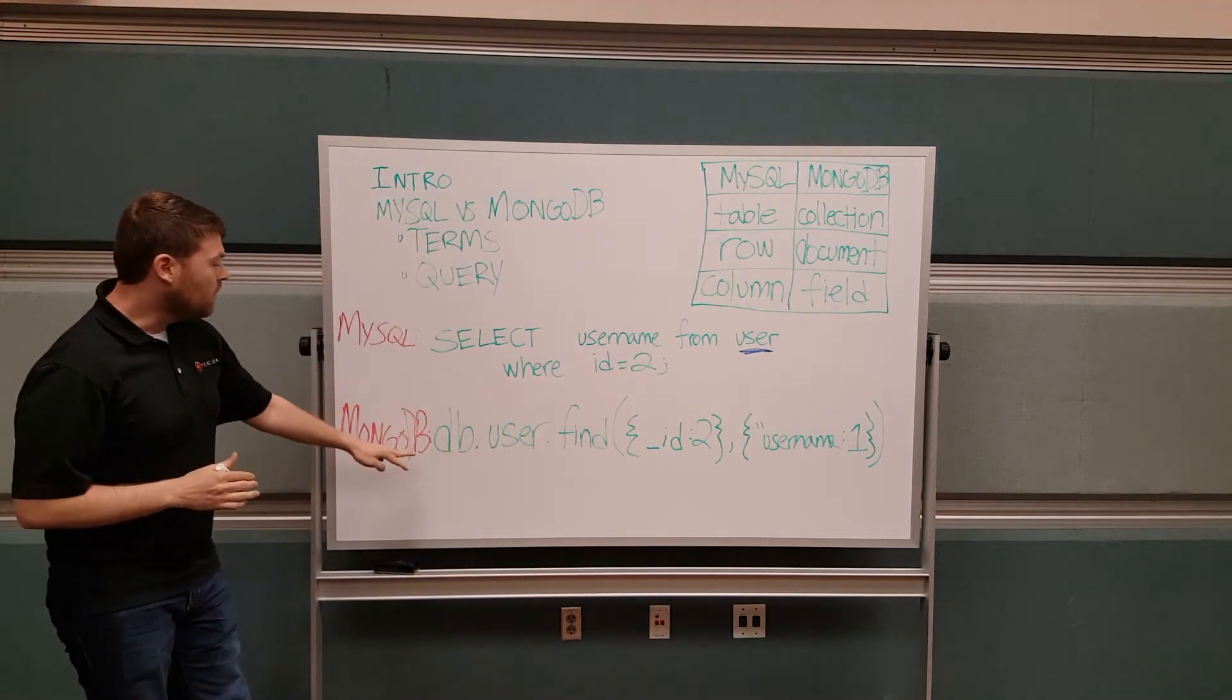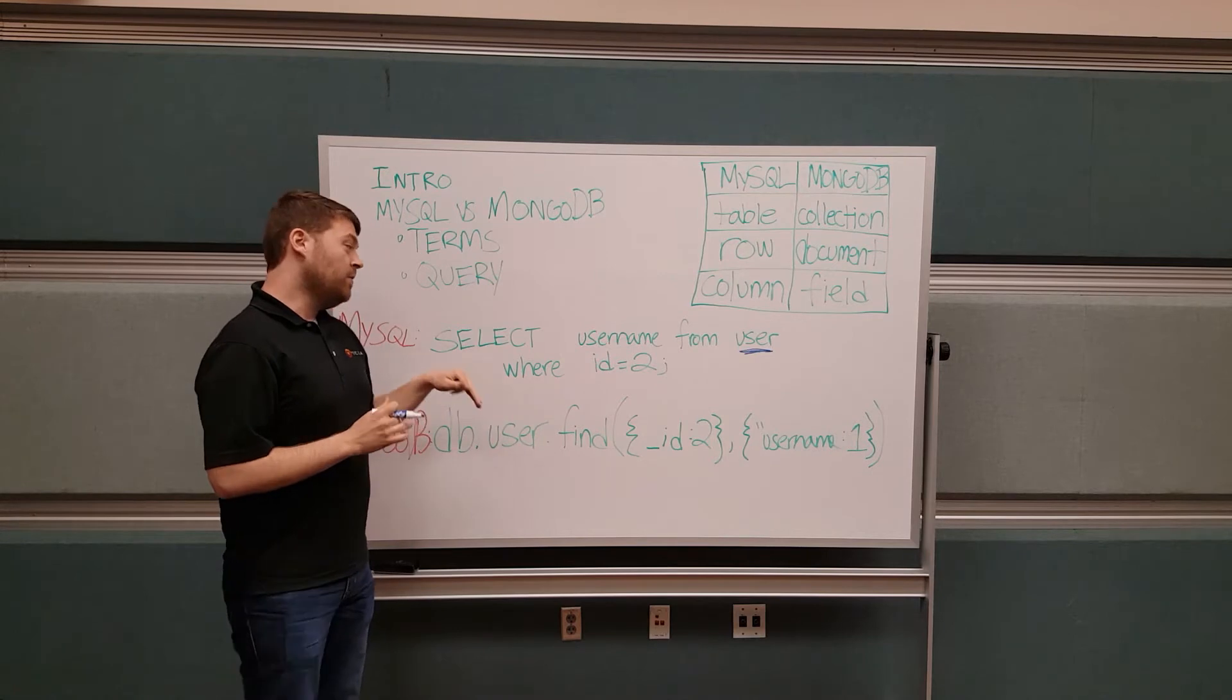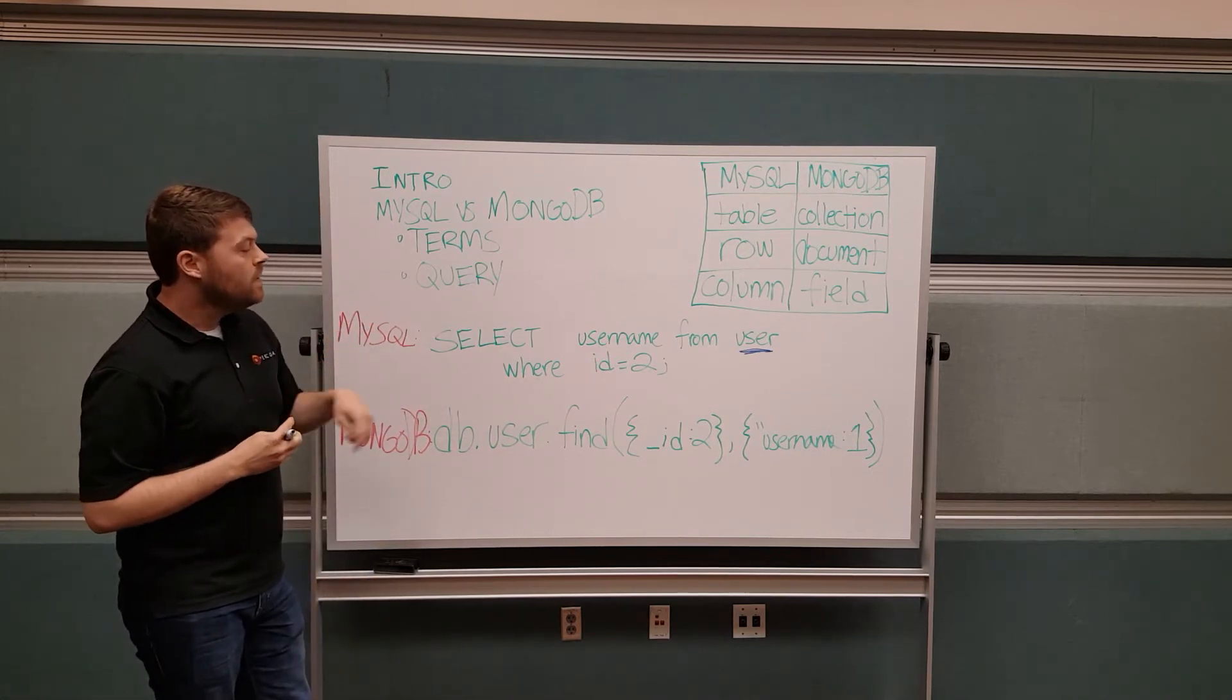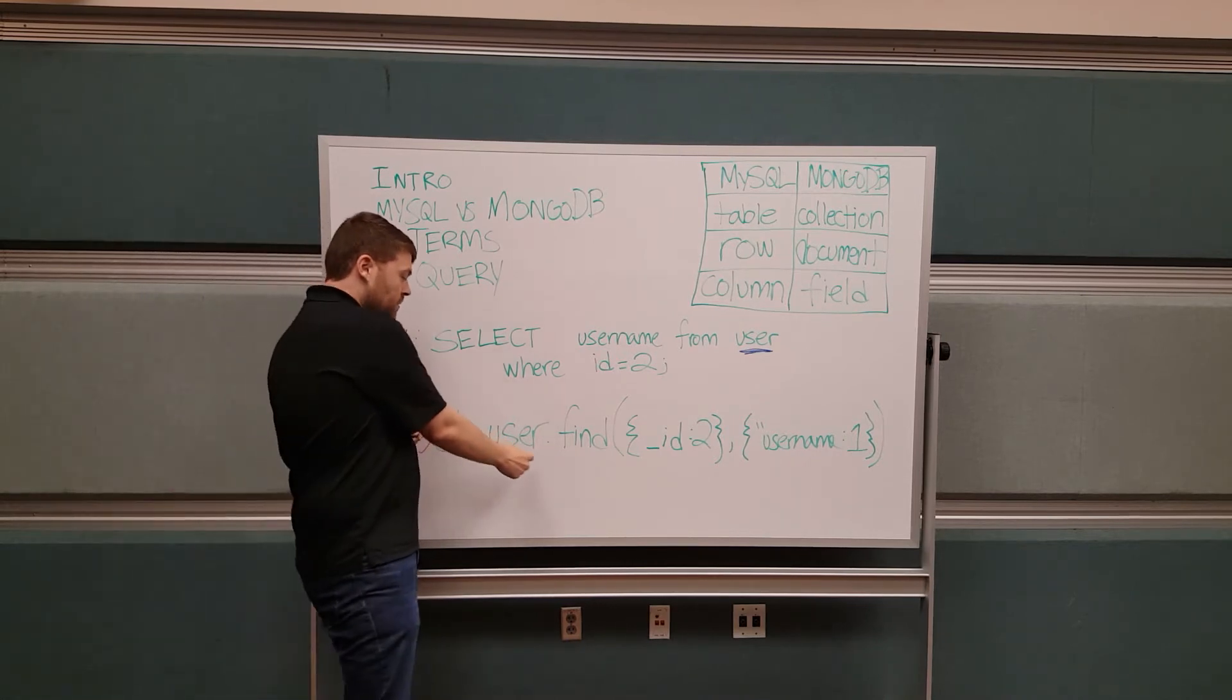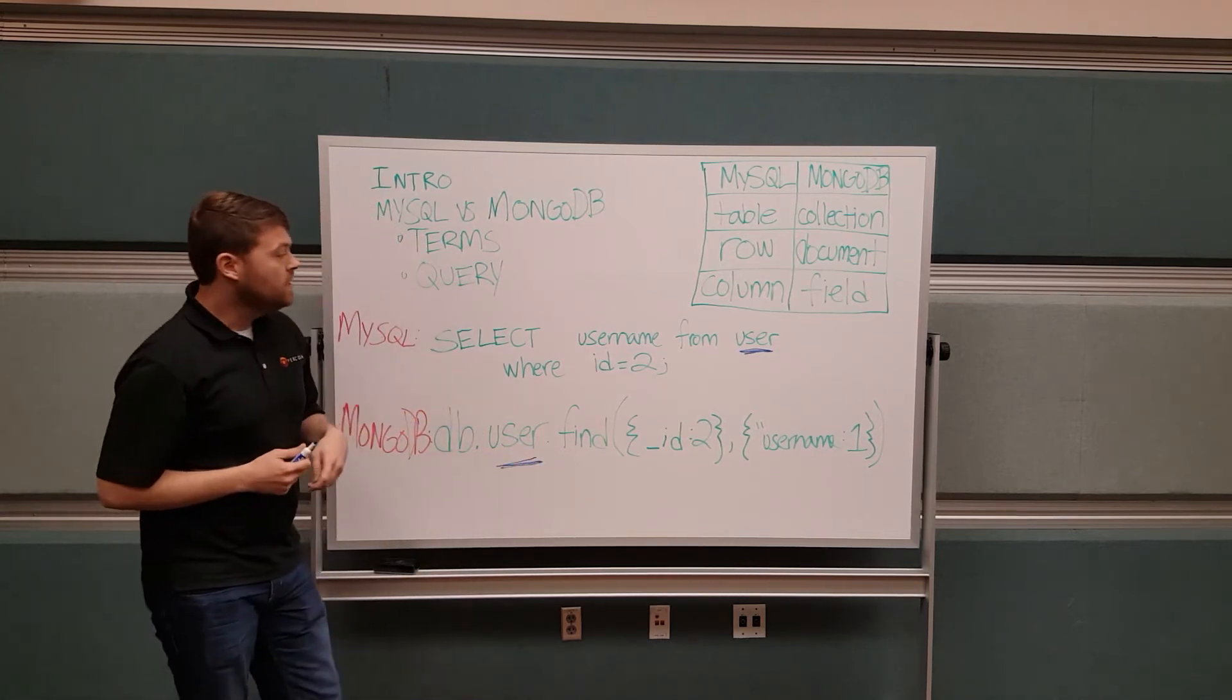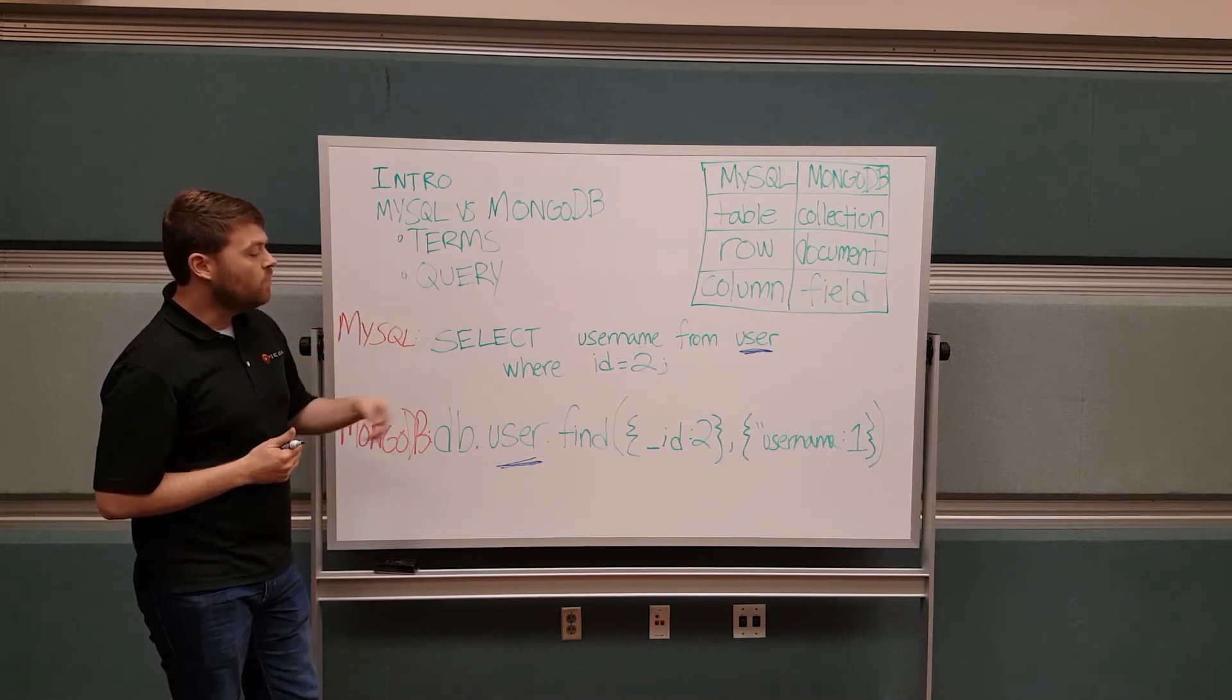If we go on down to our MongoDB query, we've got db.user.find. Then we've got what we're looking for in there. We're looking for the ID field of two. We only want to pull the result for username. User is our collection that the data is stored in. Our collection has a list of documents. We're going to scan those documents for the ID of two.